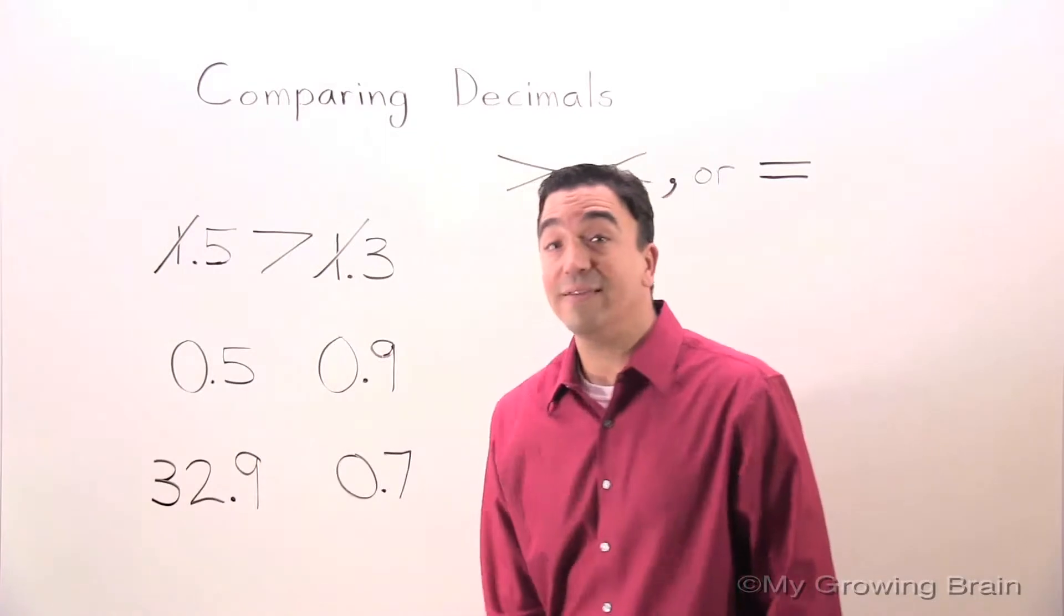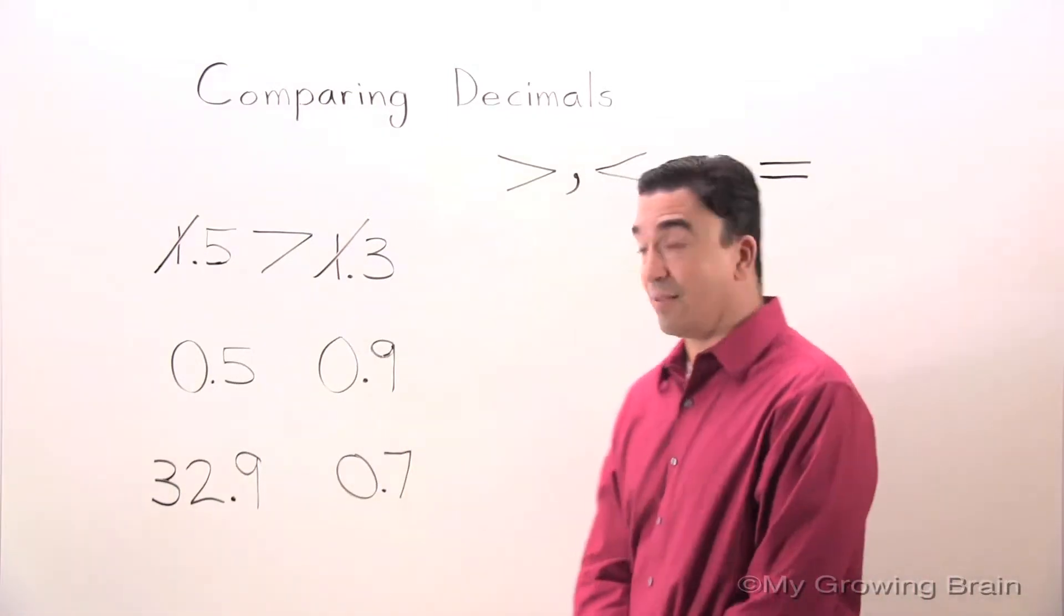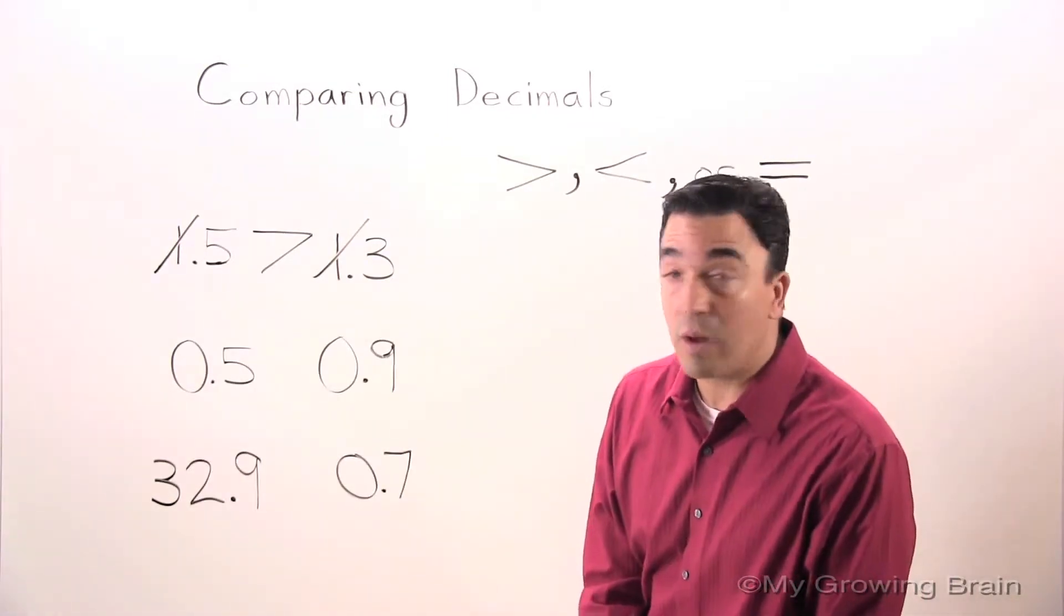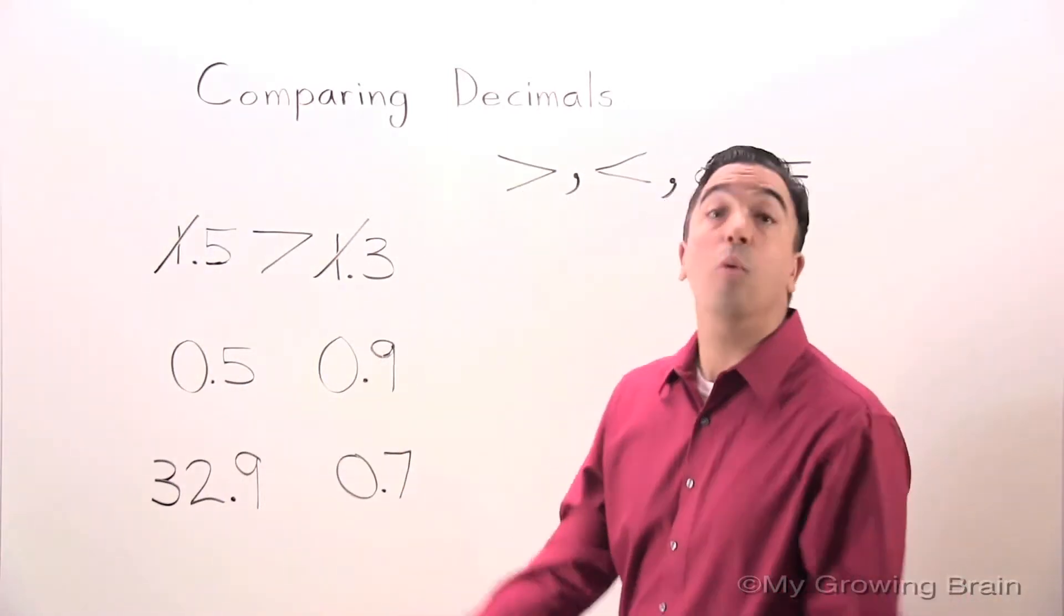Is 5 tenths greater than, less than, or equal to 9 tenths? Let's look in the ones place. 0, 0. They're both the same, so we've got to move on.